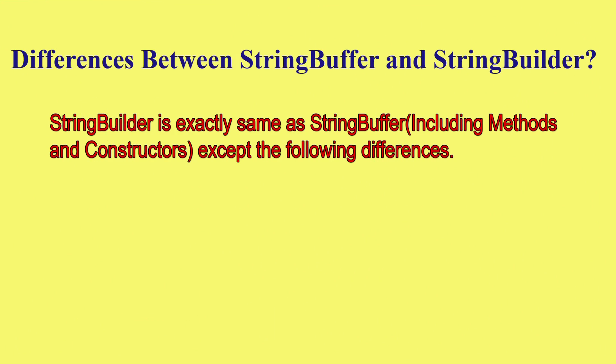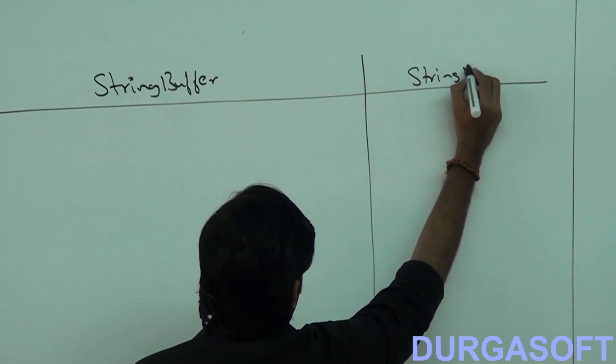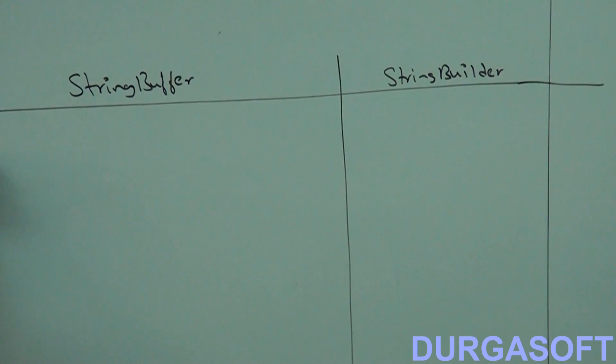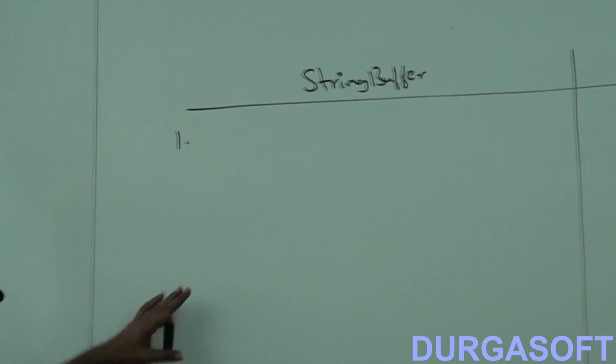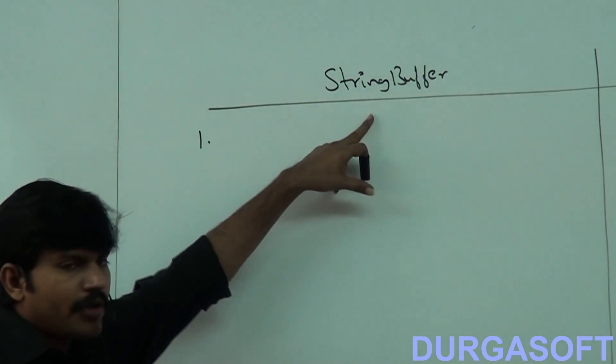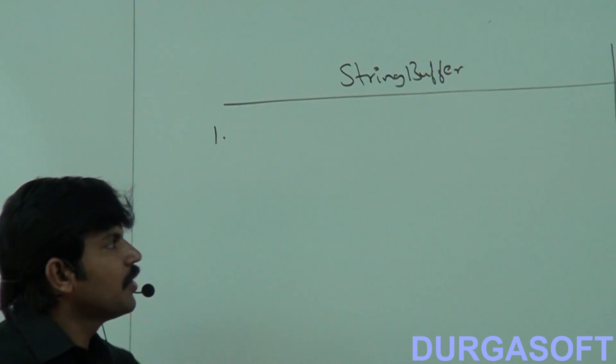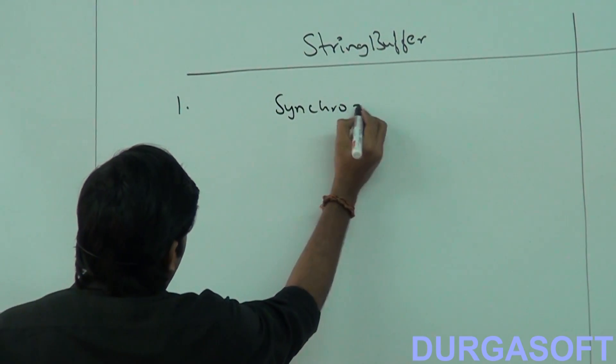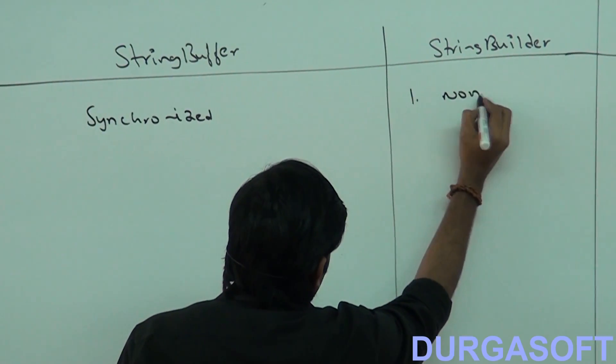I hope you are able to understand the difference between StringBuffer and StringBuilder. Let's take a small comparison table. First point: every method present in StringBuffer is always synchronized, but no method present in StringBuilder is synchronized — every method in StringBuilder is non-synchronized.